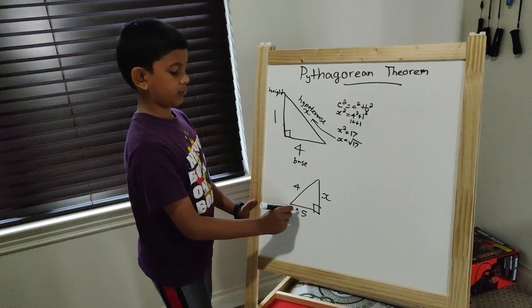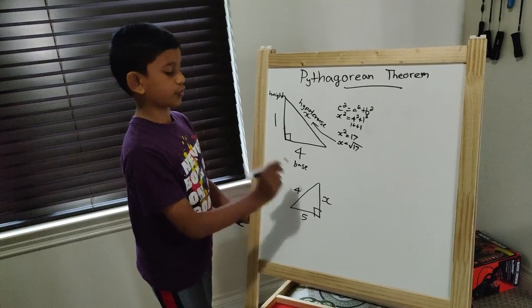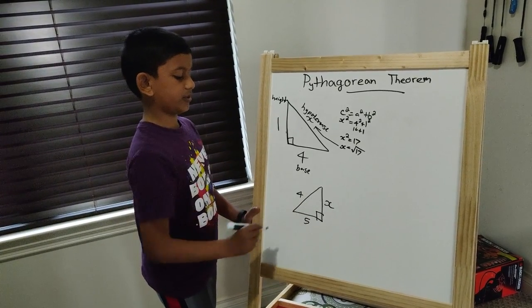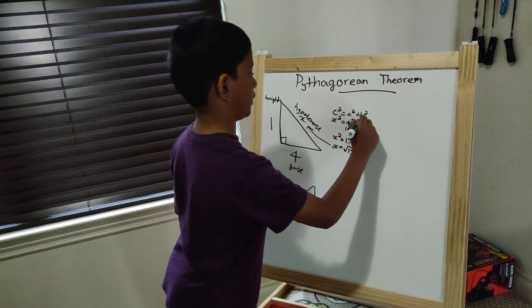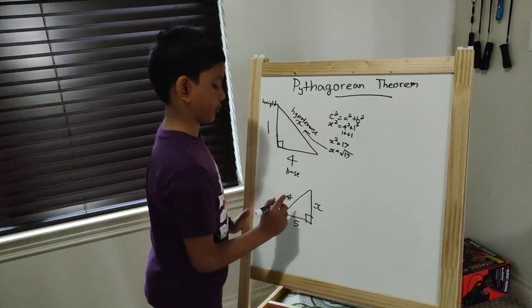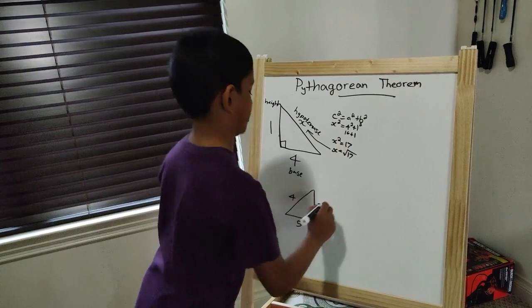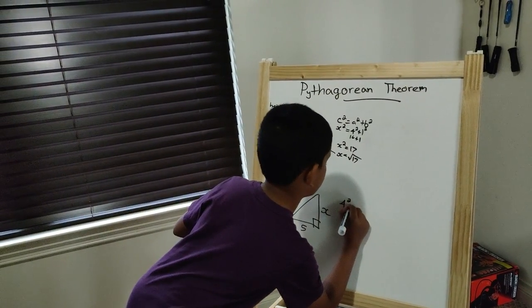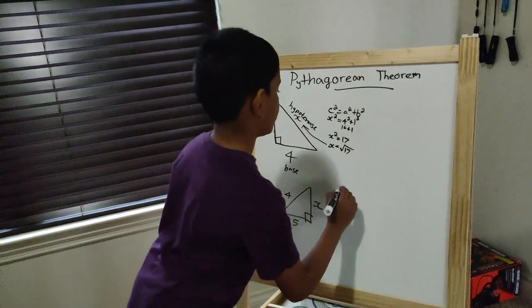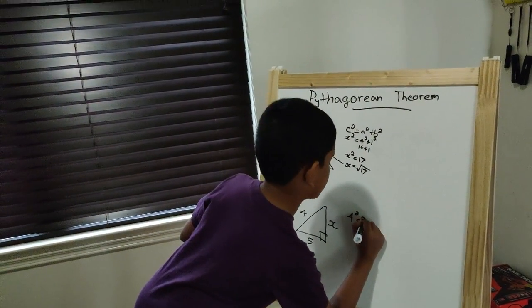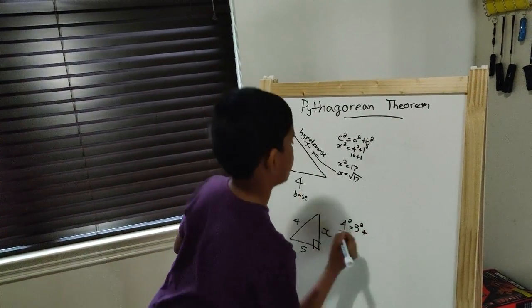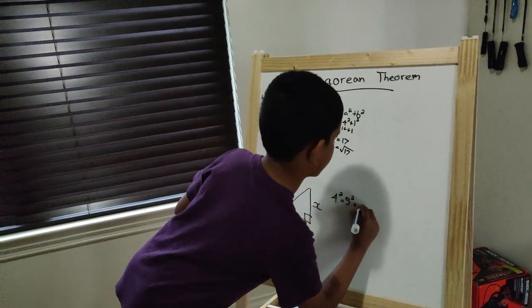You know the base, you know the hypotenuse, you just don't know the height. Same formula: c² = a² + b². The hypotenuse is 5, so 5² equals 4², the base, plus x², the height.